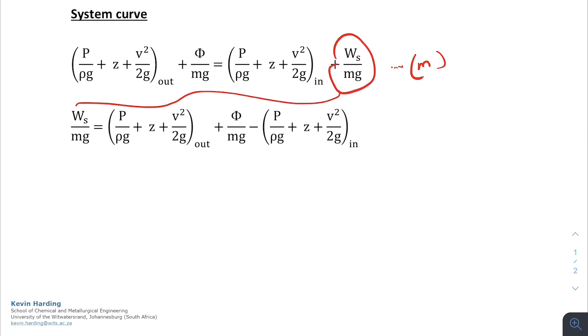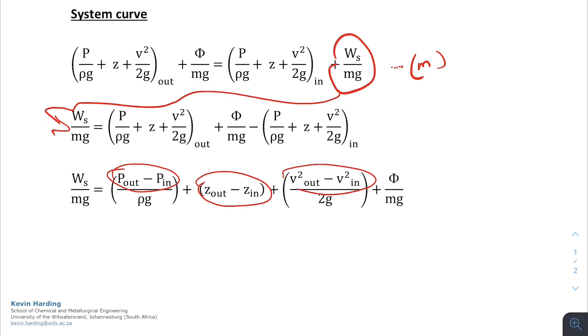I'm going to take the Ws and put it in the front, and I will then group all the similar terms of pressure, height, and velocity together, so we've got the outs and the ins together, and I'll leave the friction at the end. So we now have an equation that relates the head of our system to the pressure, the height, the velocity, and the friction terms.